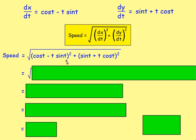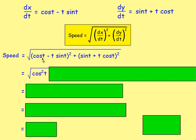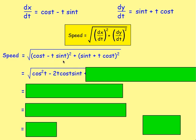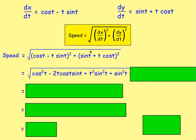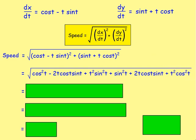Expanding (cos(t) − t·sin(t))² gives cos²(t) − 2t·cos(t)·sin(t) + t²·sin²(t). Expanding (sin(t) + t·cos(t))² gives sin²(t) + 2t·cos(t)·sin(t) + t²·cos²(t). Together these four terms remain after expansion.